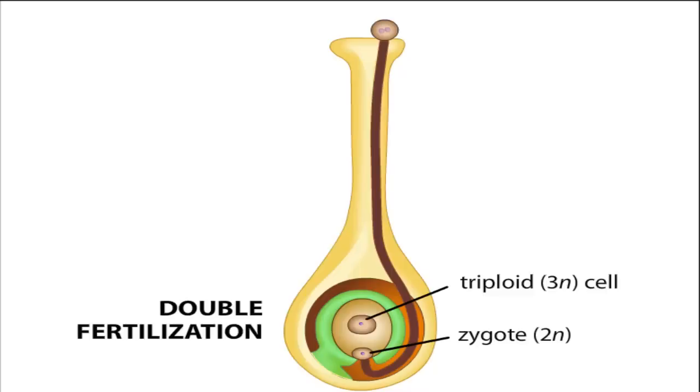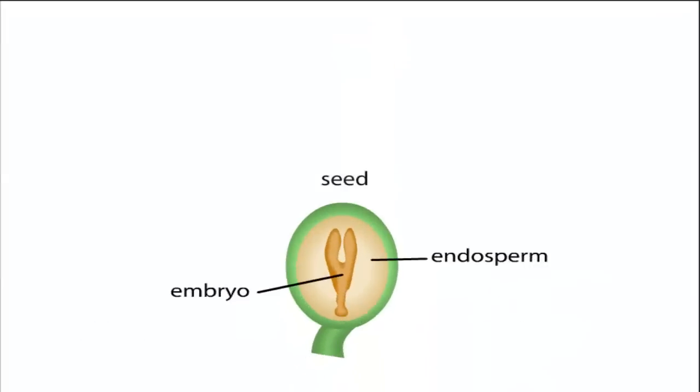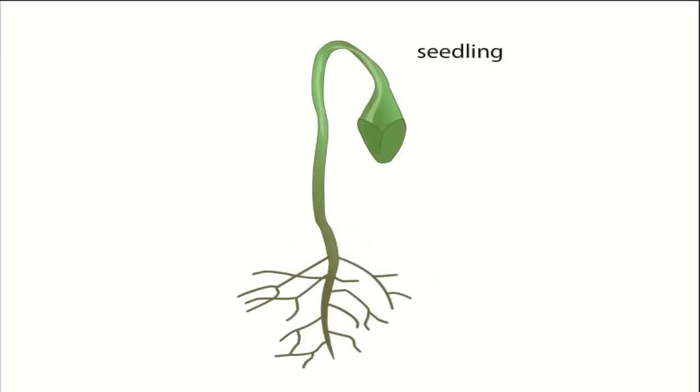The zygote, which begins the next sporophyte generation, develops into the embryo, while the triploid cell develops into the nutritive endosperm of the seed. The seed germinates, and when the sporophyte matures, the life cycle begins again.